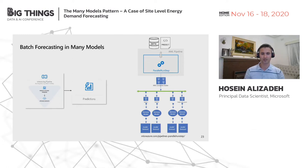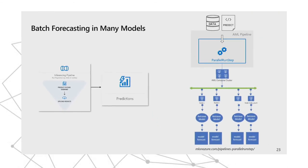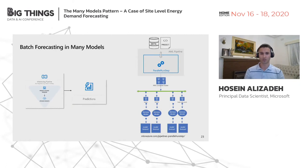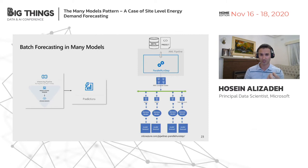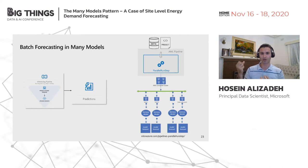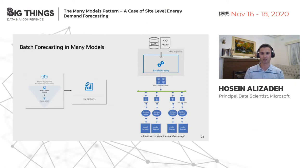The batch forecasting architecture is very similar to the batch training architecture. On the right-hand side you have your data and your prediction script, which you provide to the many models solution — specifically to the Parallel Run Step. The Parallel Run Step again distributes work across the cluster, and every node takes a subset of the data with the predict script, retrieves the relevant model from the model registry, applies that model to its part of the data, and provides the forecast.